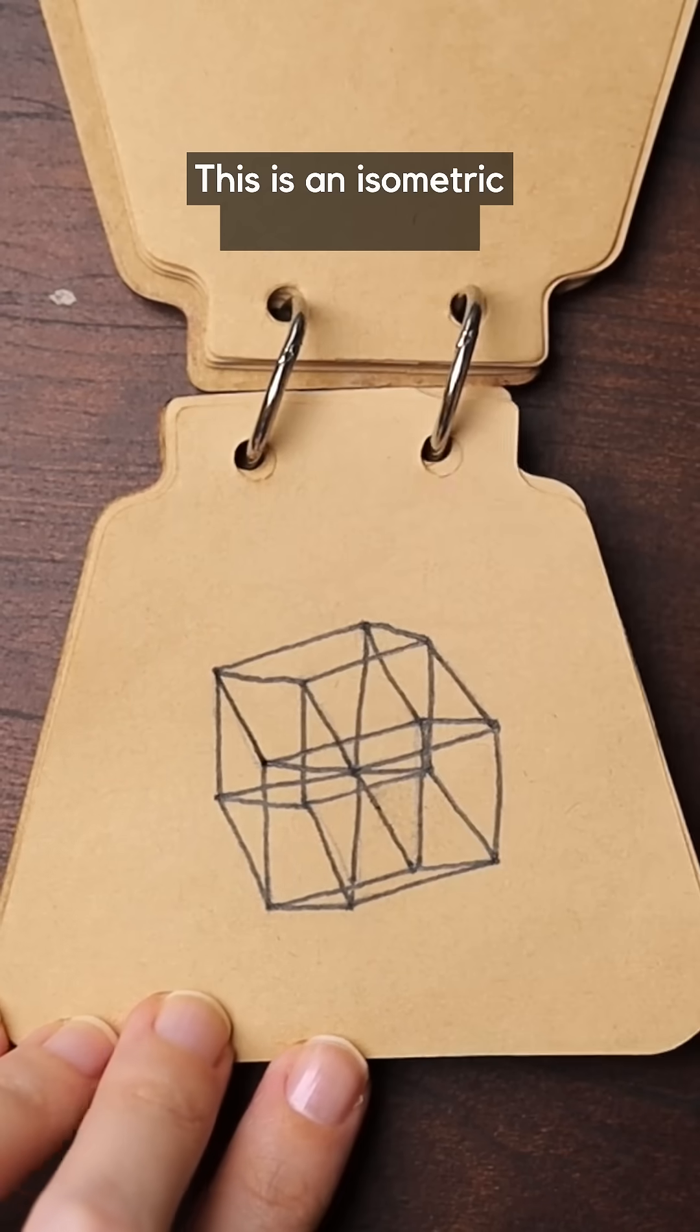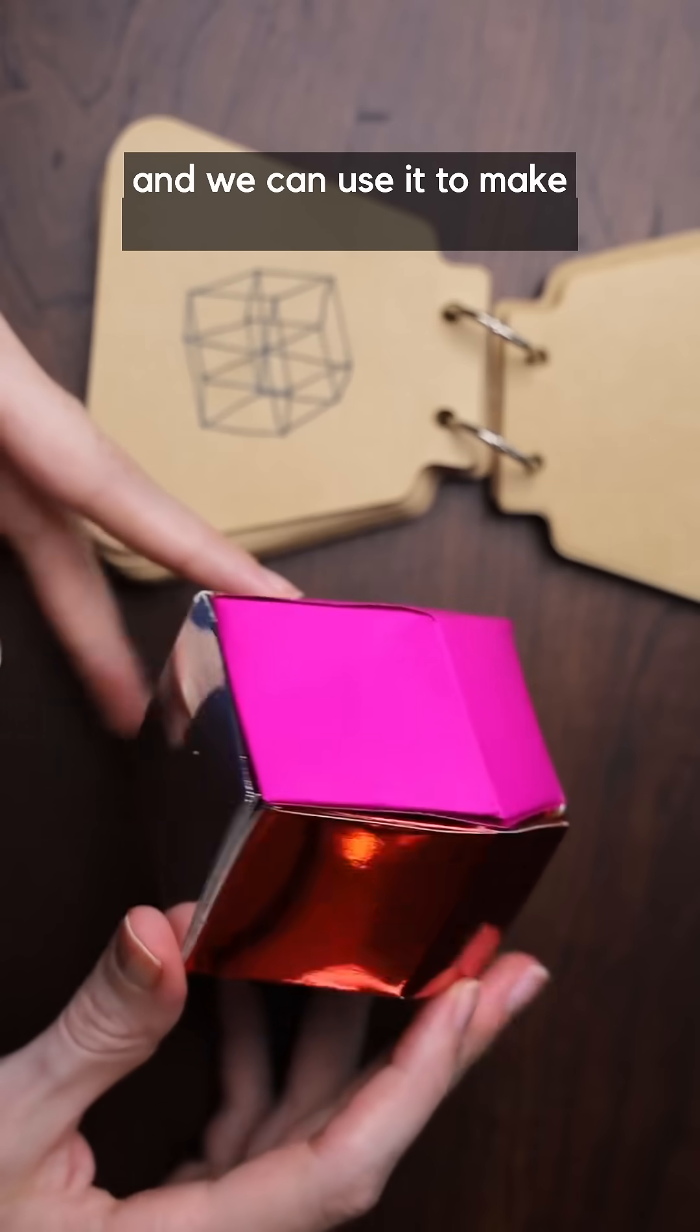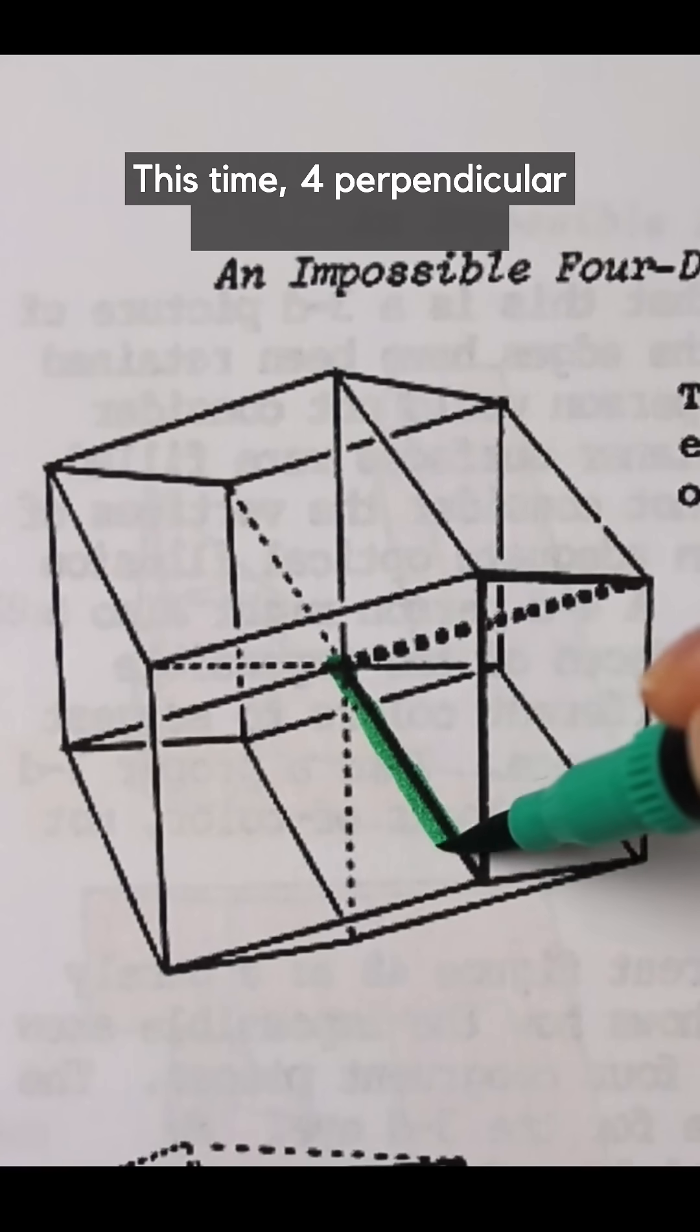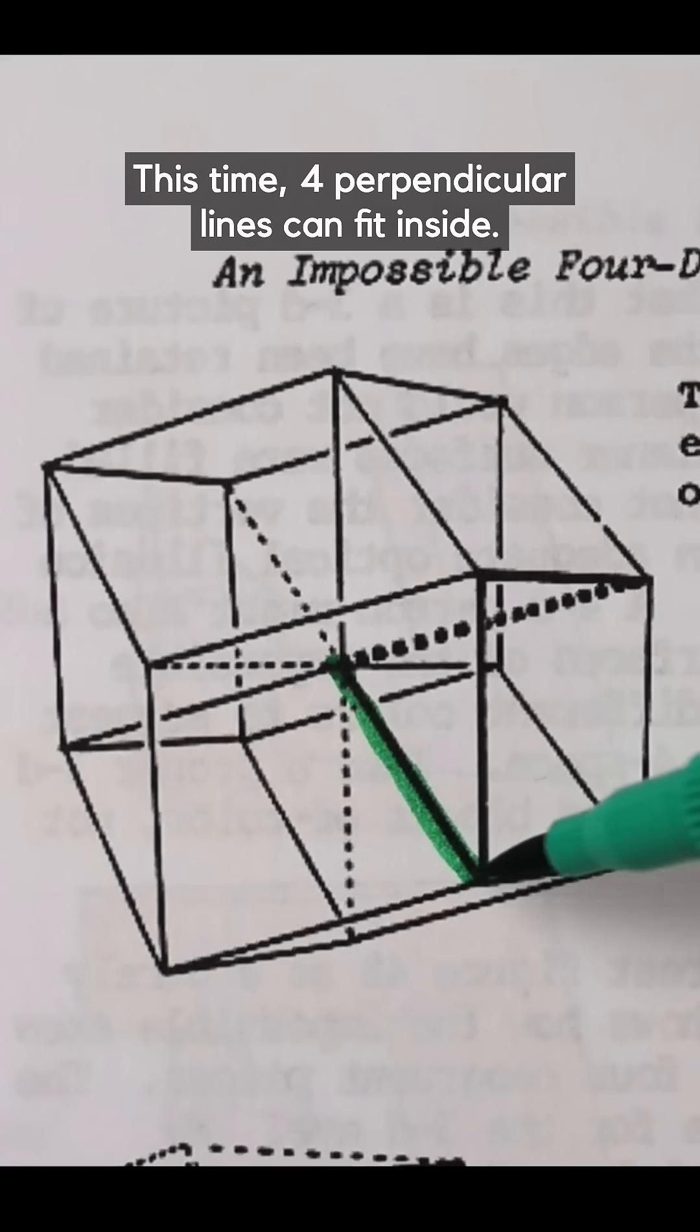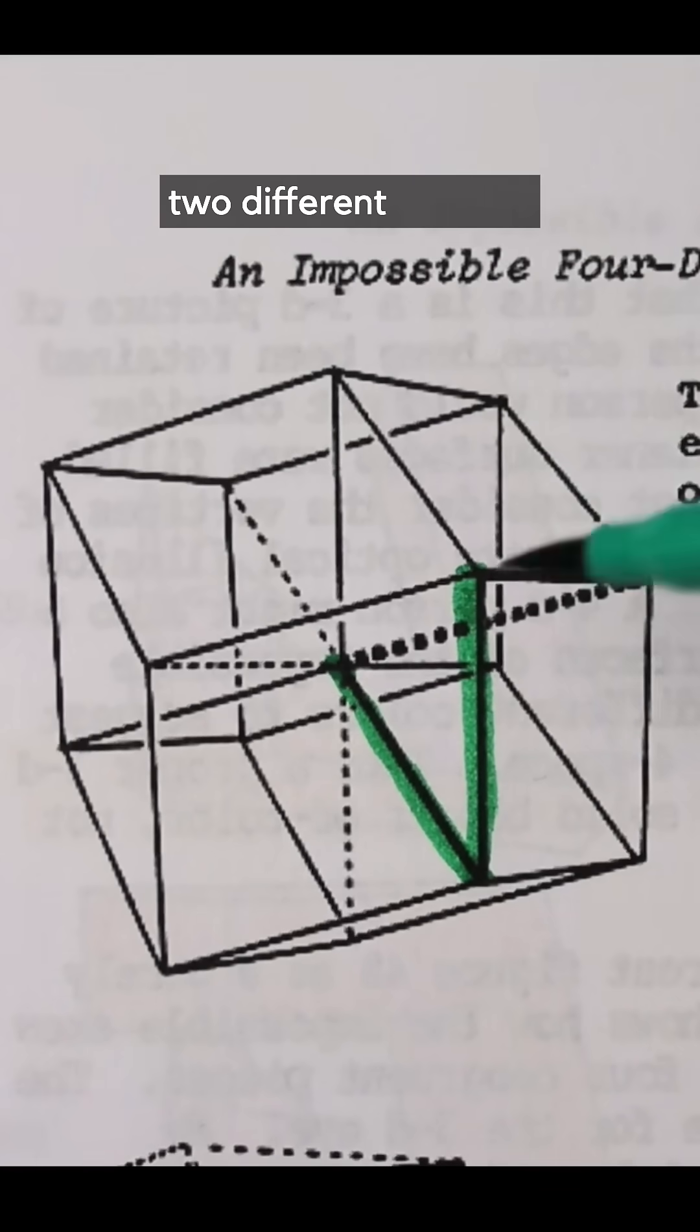This is an isometric projection of a 4D hypercube and we can use it to make a similar impossible object. This time four perpendicular lines can fit inside. Again there is a central point that represents two different corners.